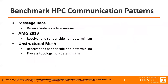Along with the four stages of this framework, AnsonX comes packaged with three HPC communication pattern benchmarks: specifically, the message race benchmark, the AMG 2013 benchmark, and the unstructured mesh benchmark. Each of these benchmarks incorporates a different type or combination of types of non-determinism that are common and representative among MPI applications. The message race benchmark includes receiver-side non-determinism. The AMG 2013 benchmark adds sender-side non-determinism. And finally, the unstructured mesh benchmark adds process topology non-determinism.